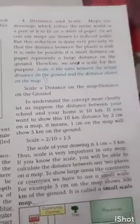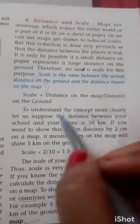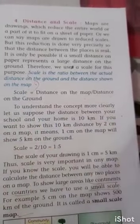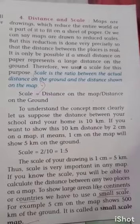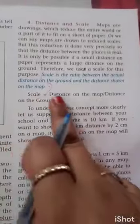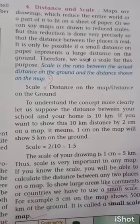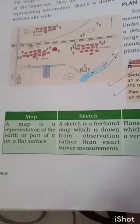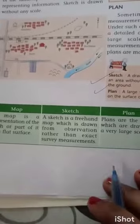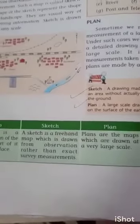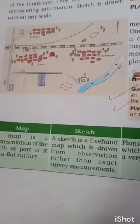Mark the formula for scale — it is important. The formula is: distance on the map divided by distance on the ground. Mark this formula. It is on page number 18, which is the last page of this chapter.